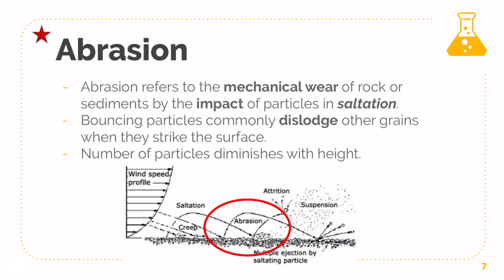Abrasion is basically the mechanical wear of rock due to the impact of particles in saltation — which is a transportation process. What actually happens is that abrasion occurs when a particle hits another particle. Saltation is basically where particles get carried up to a certain height and then fall within two meters of range, hitting against another rock or particle. As a result, this dislodges other grains, causing an abrasion effect, and all of them start to wear and tear.